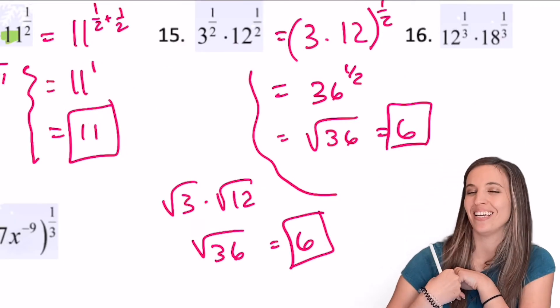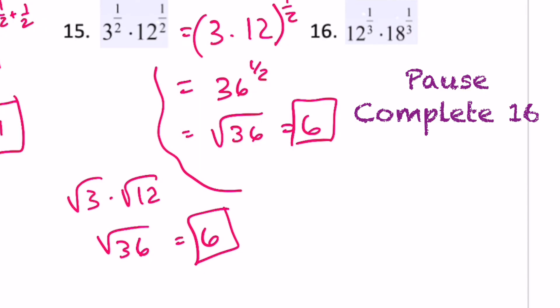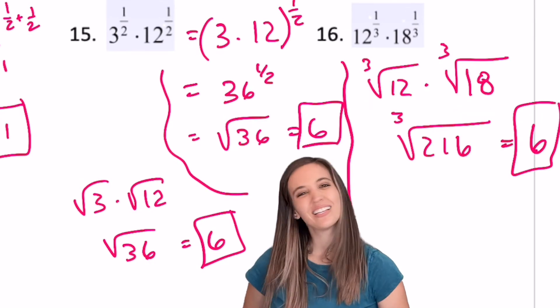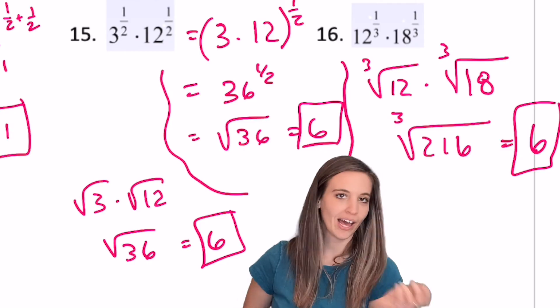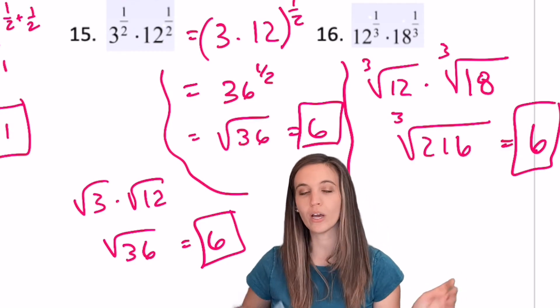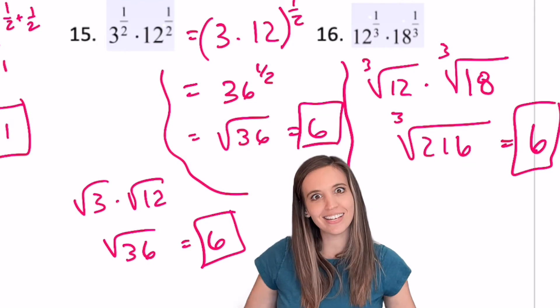Why don't you try 16? Choose the way. Since those bases were different again, I went ahead and converted them both to cube roots really quick, multiplied, got the cube root of 216, and that's 6.